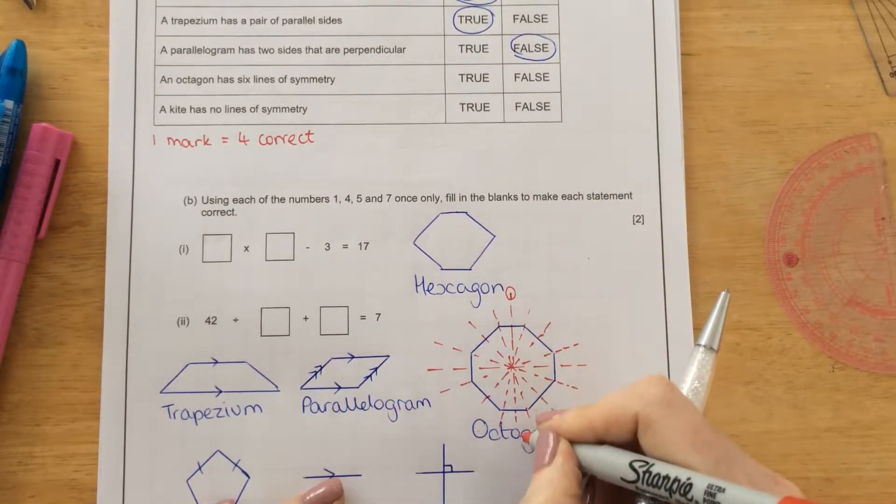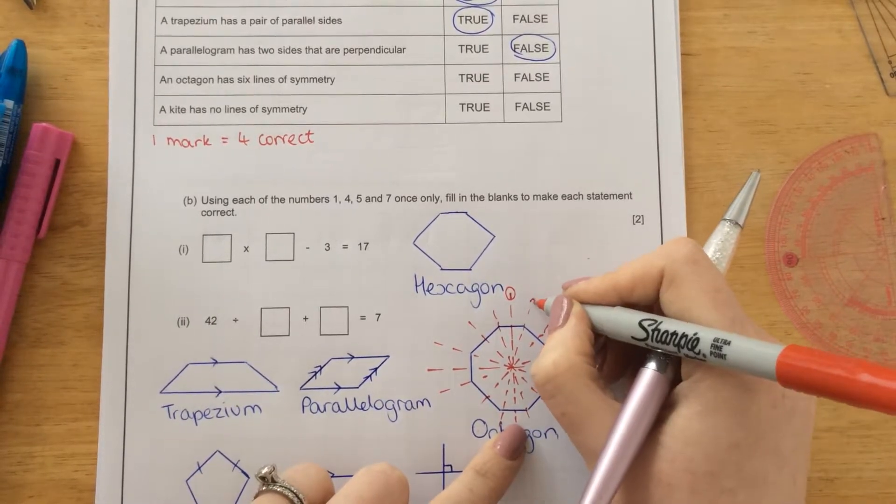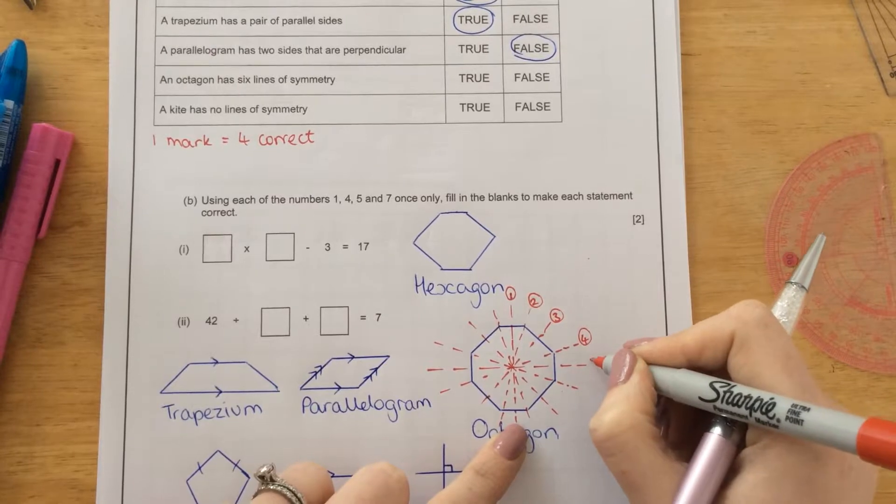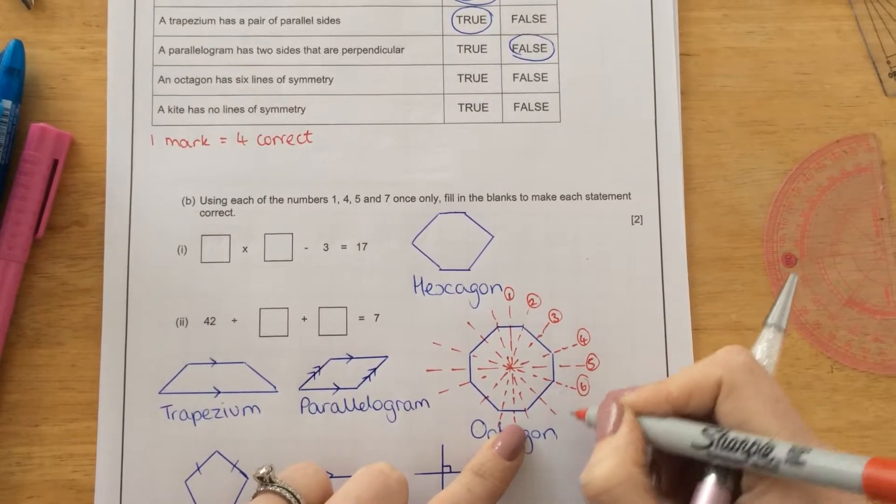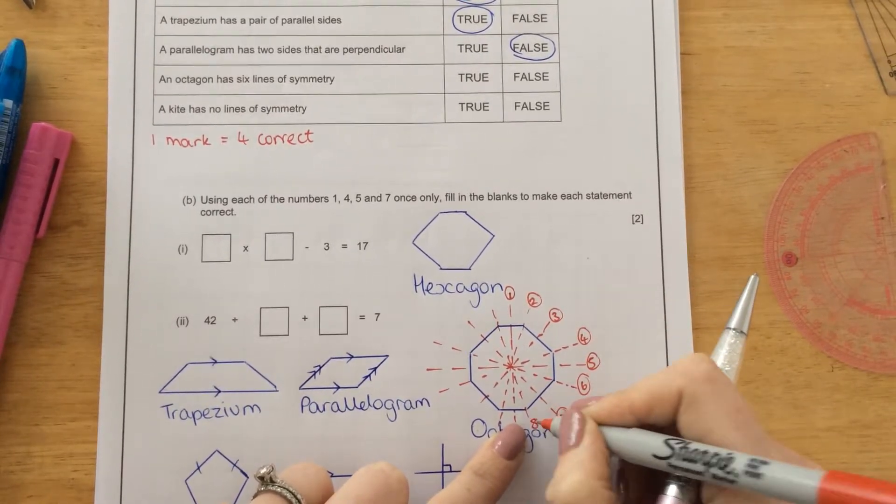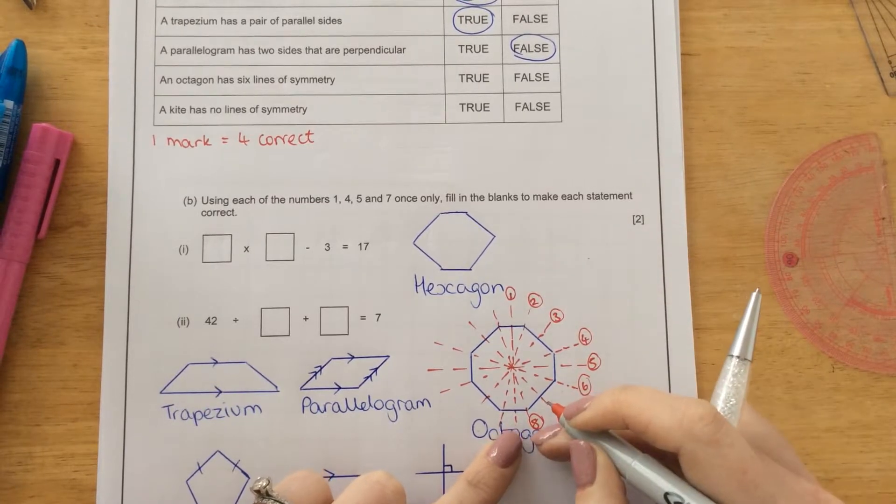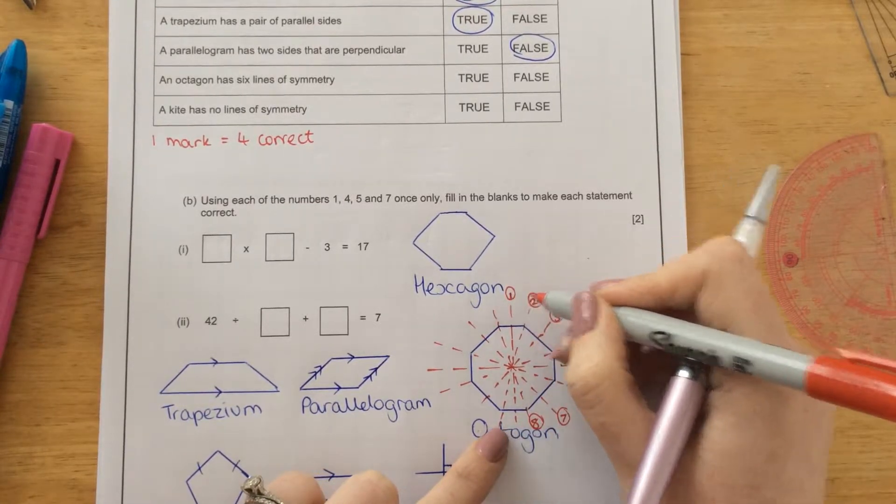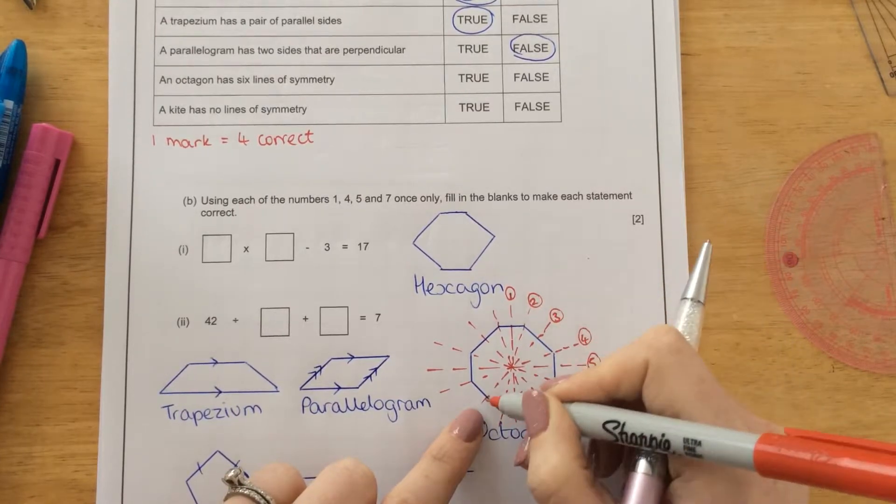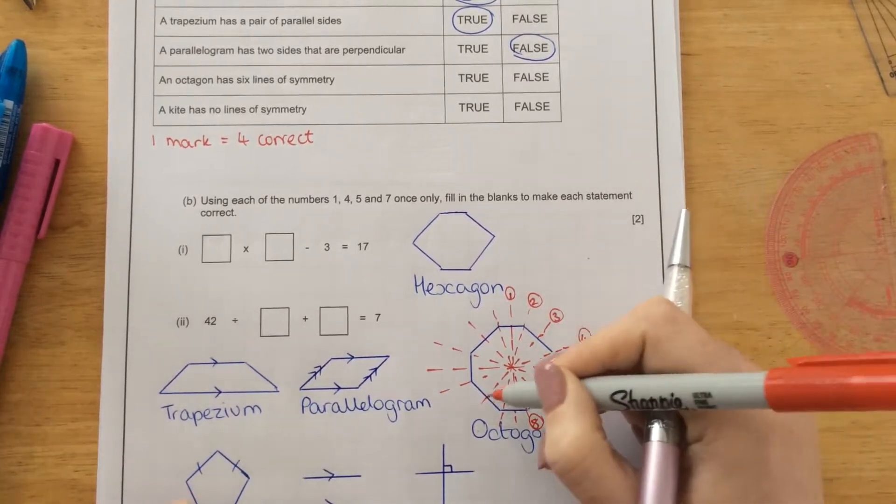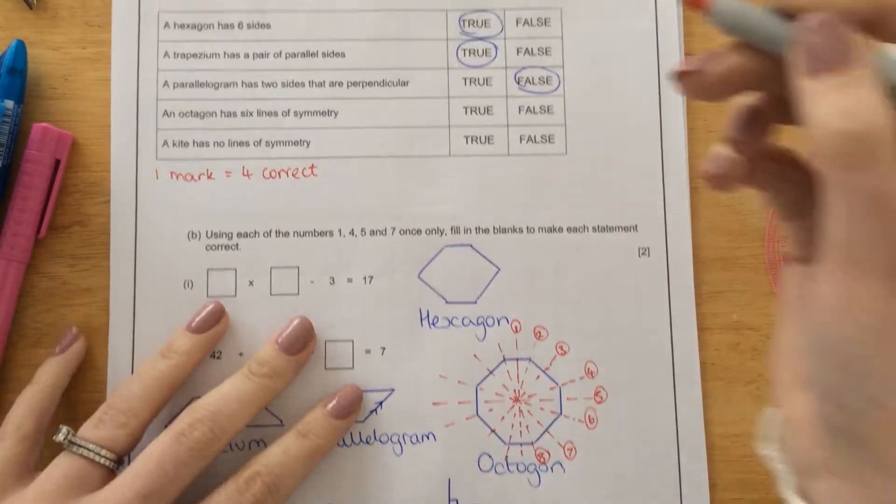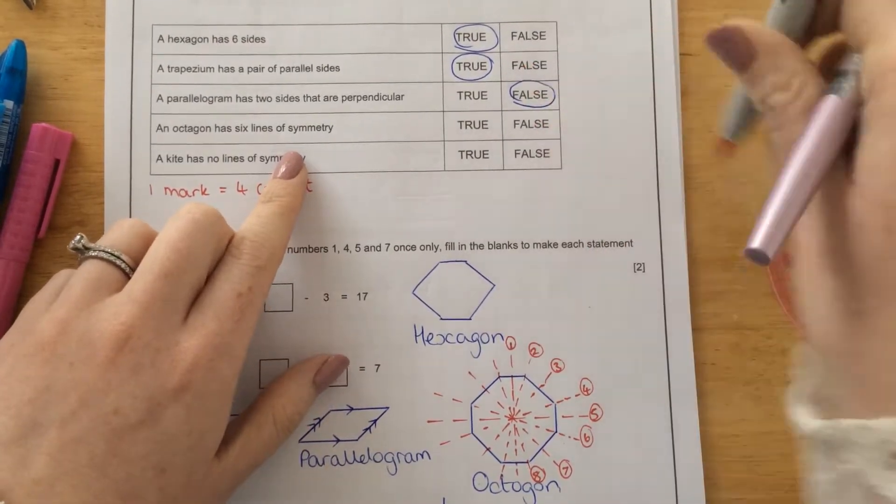So if I count how many I've done now, this was one line going down here. Two lines. Three. Four. Five. Six. Seven. Eight. I've only gone halfway across the shape now because obviously if I count this one here, I've already counted that as the first one. This was the second one, the third, and so on. So the eight-sided shape, the octagon, has eight lines of symmetry. So that is false.